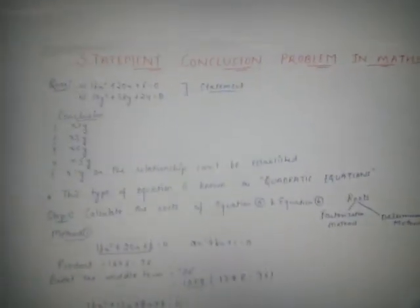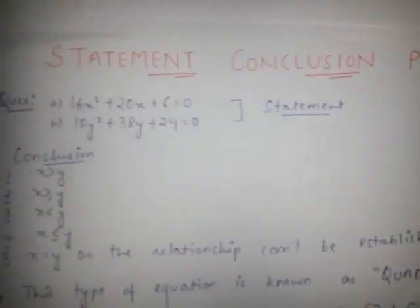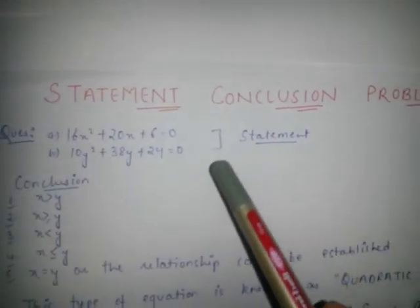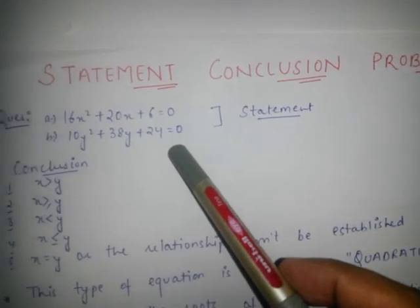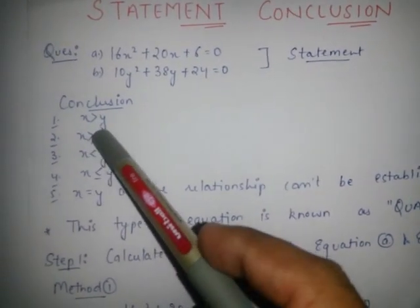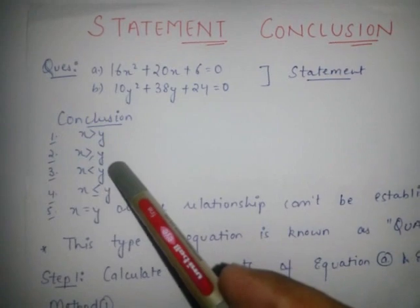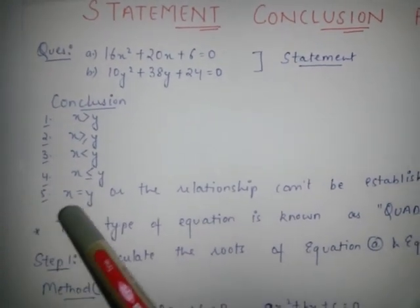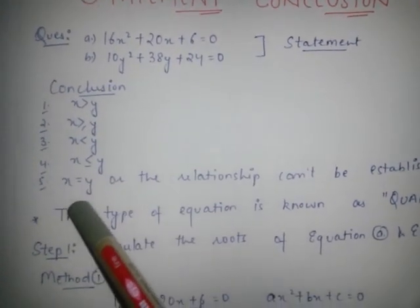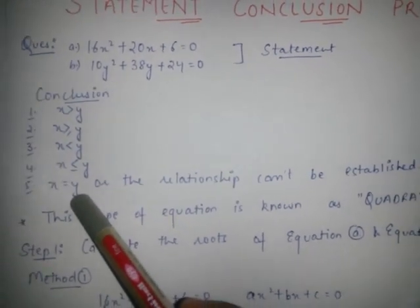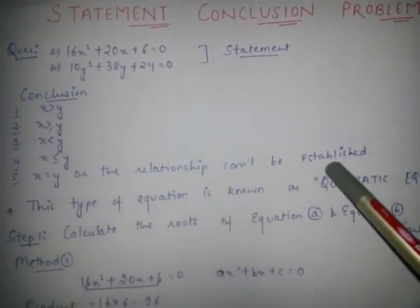Let's discuss how to solve these types of questions. In these questions you are always given two statements, and there are five conclusions: x is greater than y, x is greater than or equal to y, x is less than y, x is less than or equal to y, and the last one is x is equal to y or relationship cannot be established.